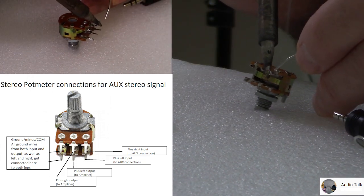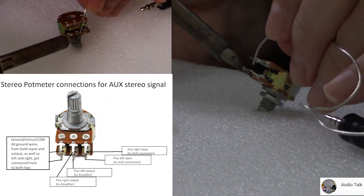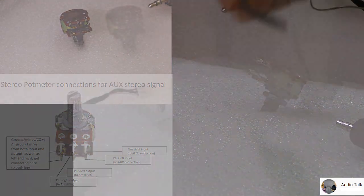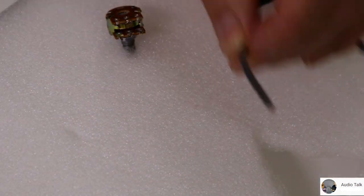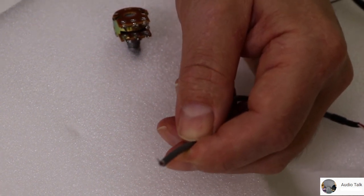And again on your far left you got your common, your minus, and in the middle you got your output to the amplifier. And then on the other side, the far right, you've got your signal in plus left and right.